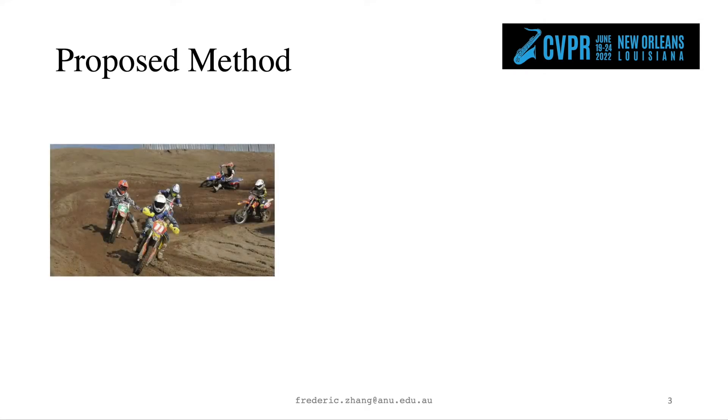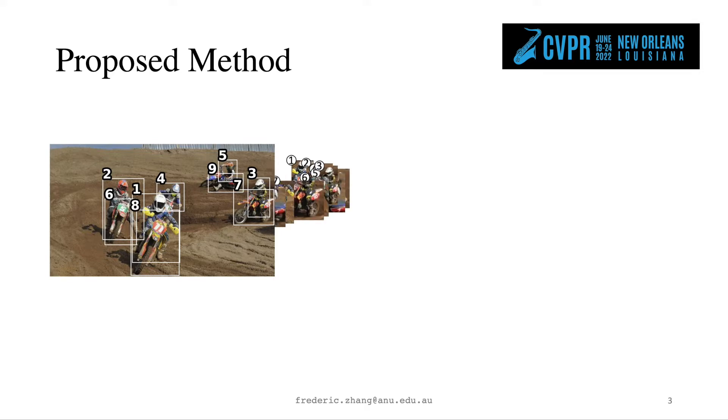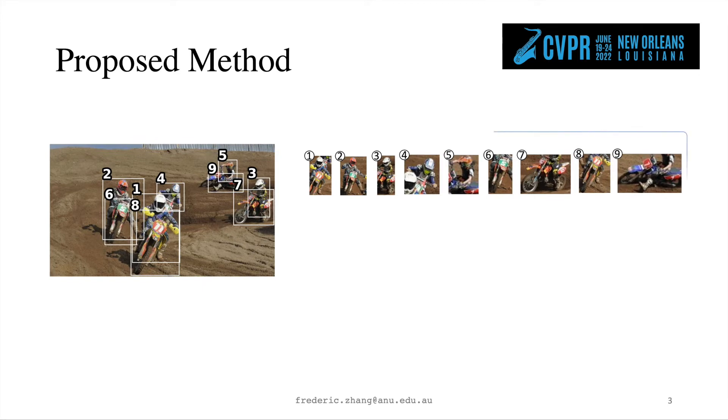So how does it achieve this? As a two-stage method, it first performs object detection and appropriate filtering. The remaining detections will then be processed by the proposed unary pairwise transformer. Specifically, we refer to these detected humans and objects as unary tokens, which will go through transformer layers with self-attention.